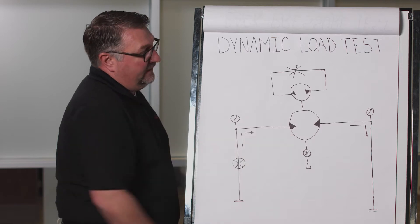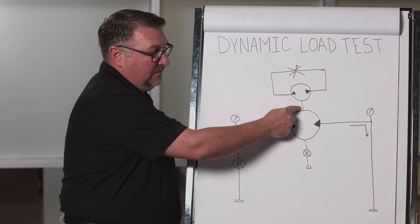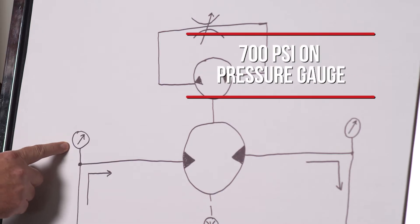Step one of the test is to get a baseline reading of the RPM output with a minimal load and roughly 700 psi on the pressure gauge.